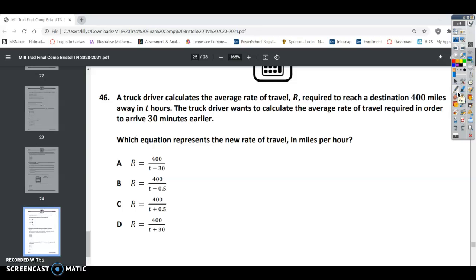Which equation represents the new rate of travel in miles per hour? All right, a couple things I noticed. This wants us to do this in miles per hour, and it says 400 miles away in T hours, but this says 30 minutes earlier. So remember 30 minutes is actually one half an hour.